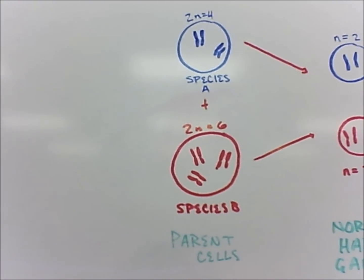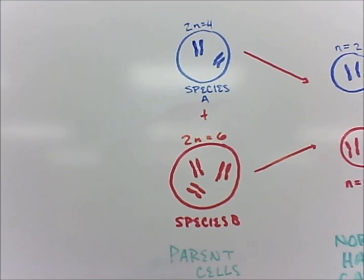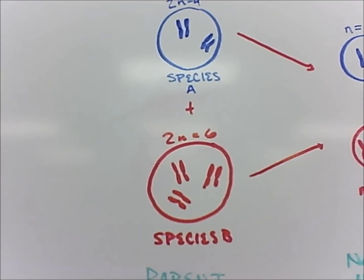An allopolyploid is a polyploid hybrid with contributions from two different species. The two species have a different number of chromosomes.